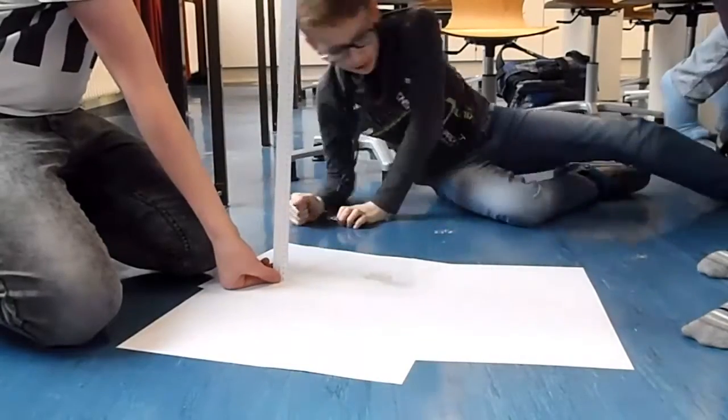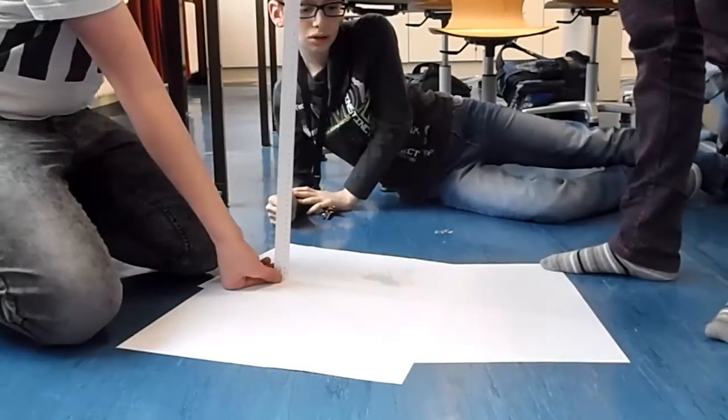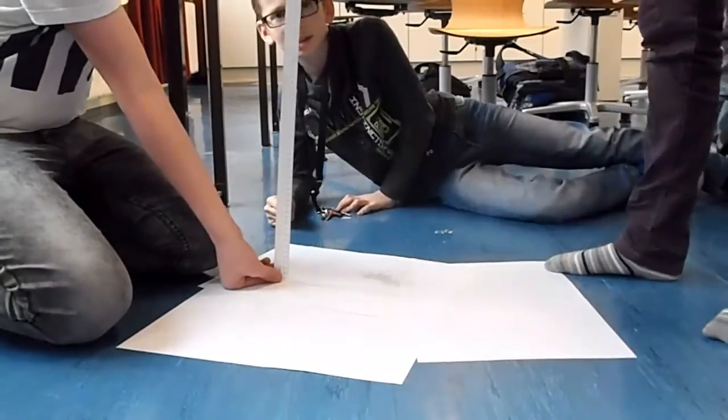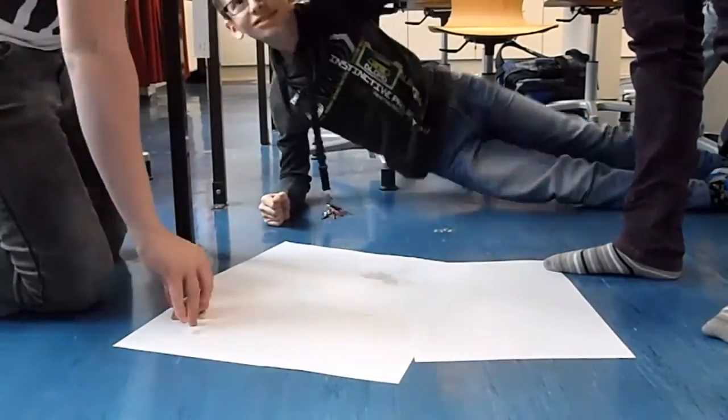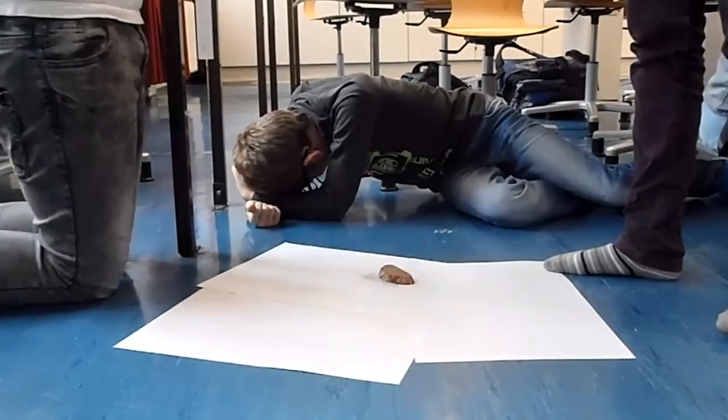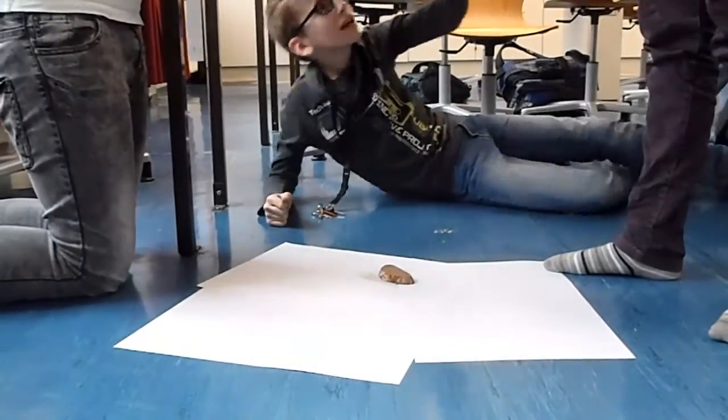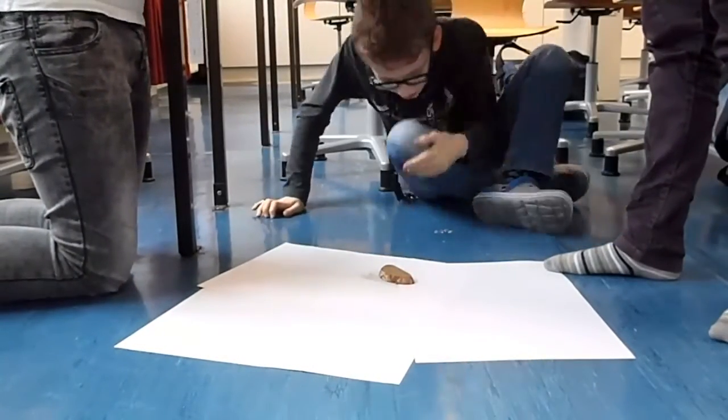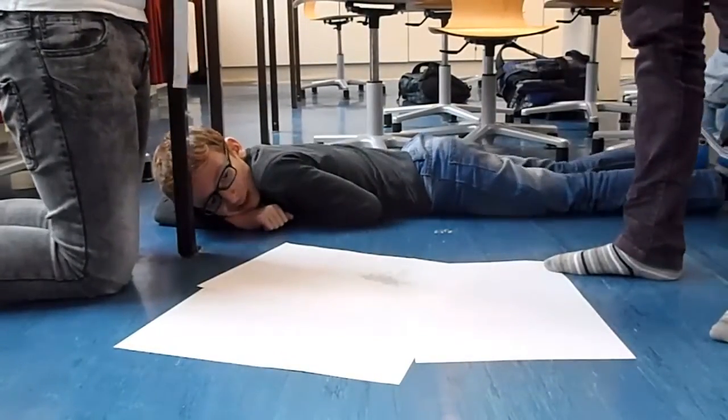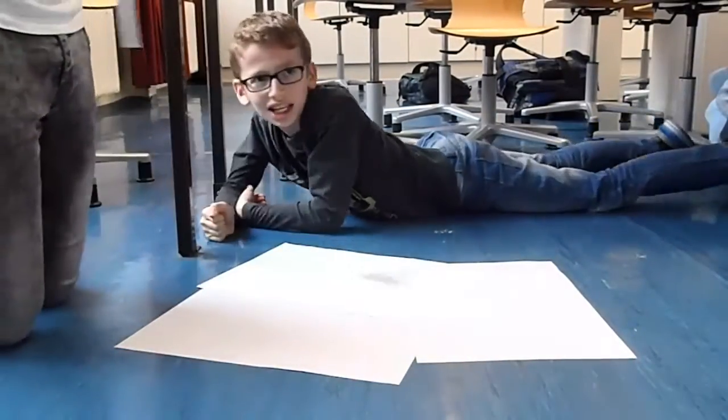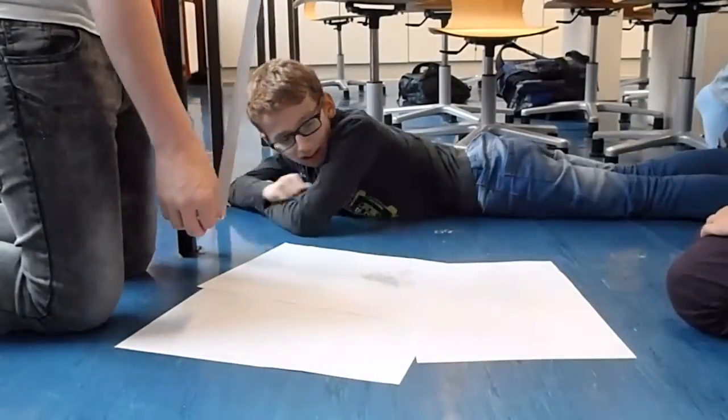Dass das Brot für eine halbe Umdrehung 46,9 cm braucht. Unsere Überlegung war, dass es für eine ganze Umdrehung 93,8 cm braucht, da es das Doppelte von 46,9 cm ist. Dann müsste das Doppelte, 187 cm, eine doppelte Umdrehung bedeuten.